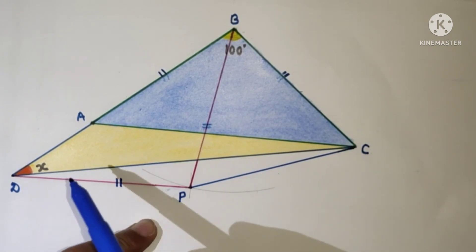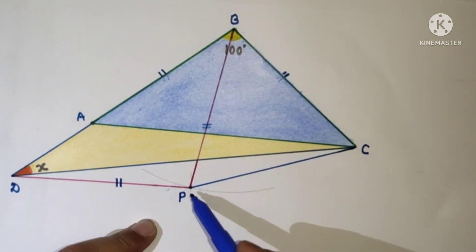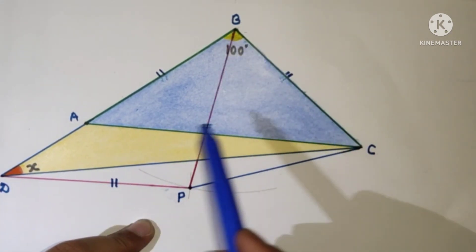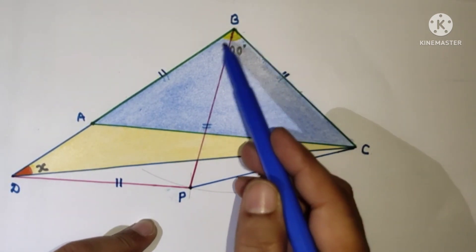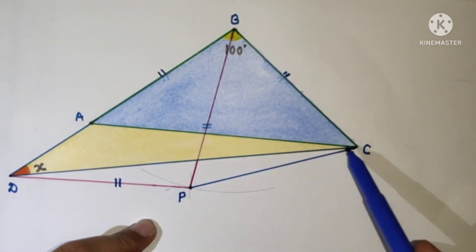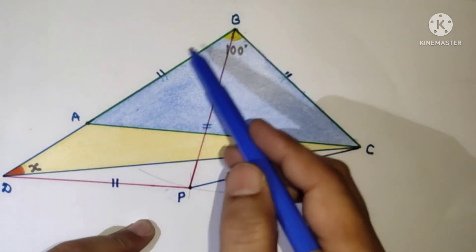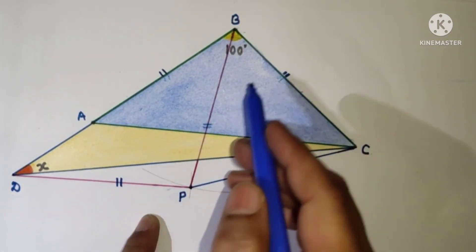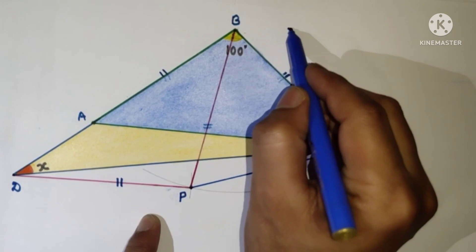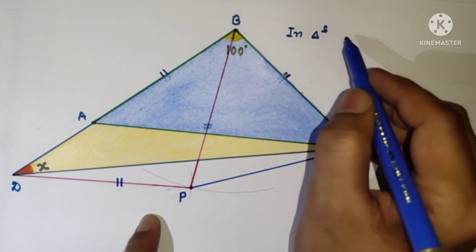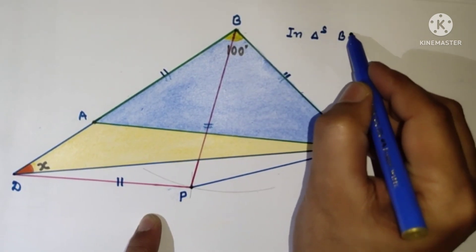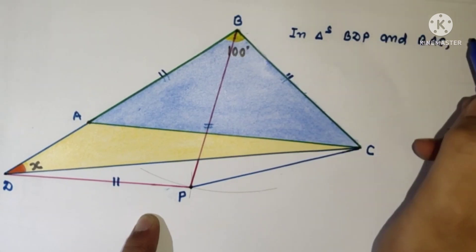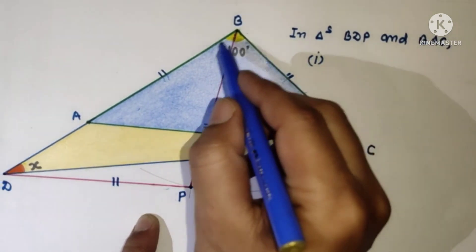Now consider two triangles BAC and BDP. Since we are given that AC is equal to BC plus AD, and BC is equal to BA, we can say that AC equals BA plus AD, which is BD. So we found AC is equal to BD.